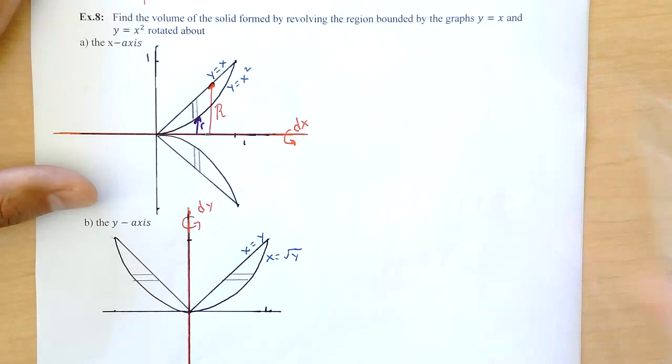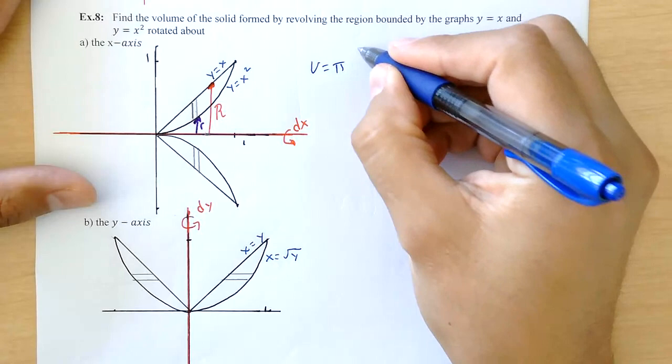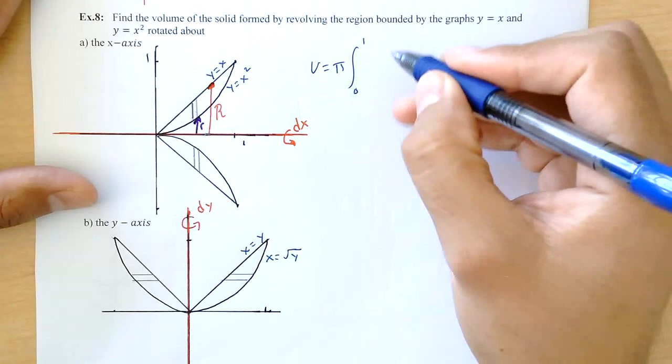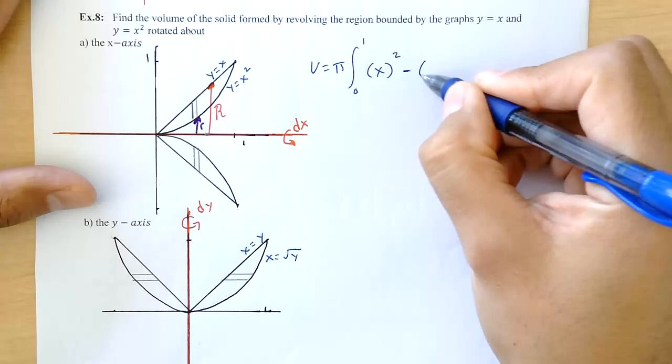And when I set up the equation, volume is equal to pi. Looking at my limits, I am going from 0 to 1. The big R squared, the big R squared minus little r squared, dx.